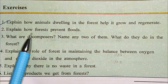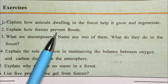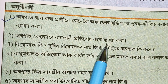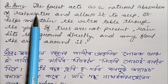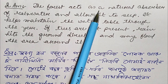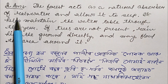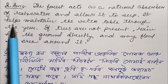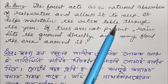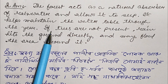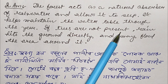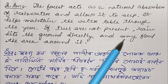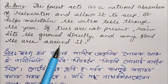Question number 2: Explain how forests prevent floods. The forest acts as a natural absorber of rainwater and allows it to sieve through. It helps to maintain the water table through the year. If trees are not present, rain hits the ground directly and may flood the area around it.